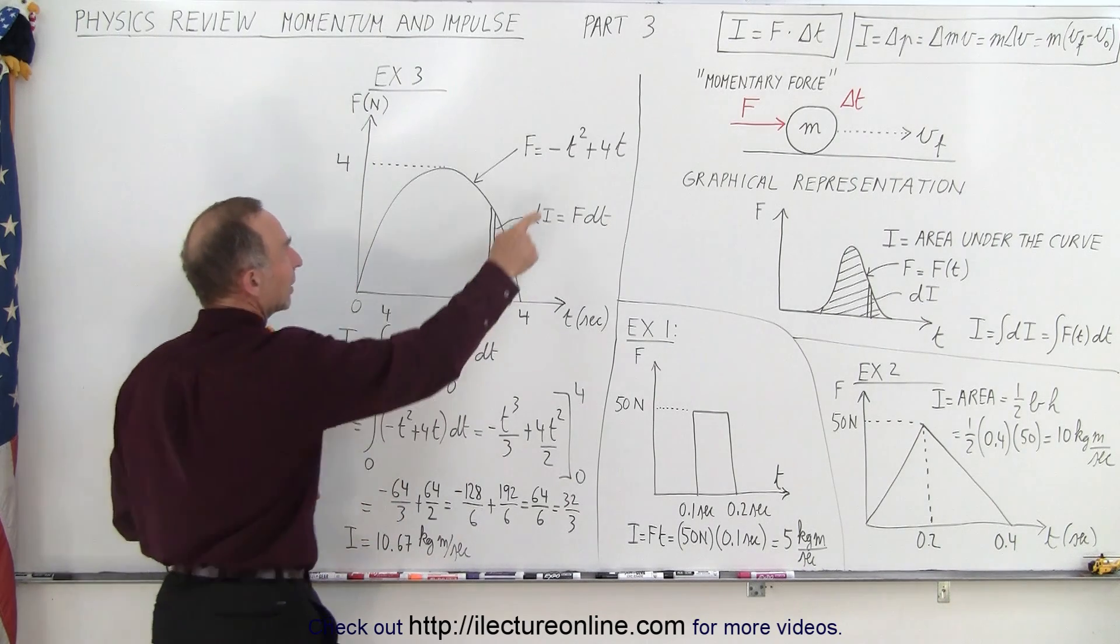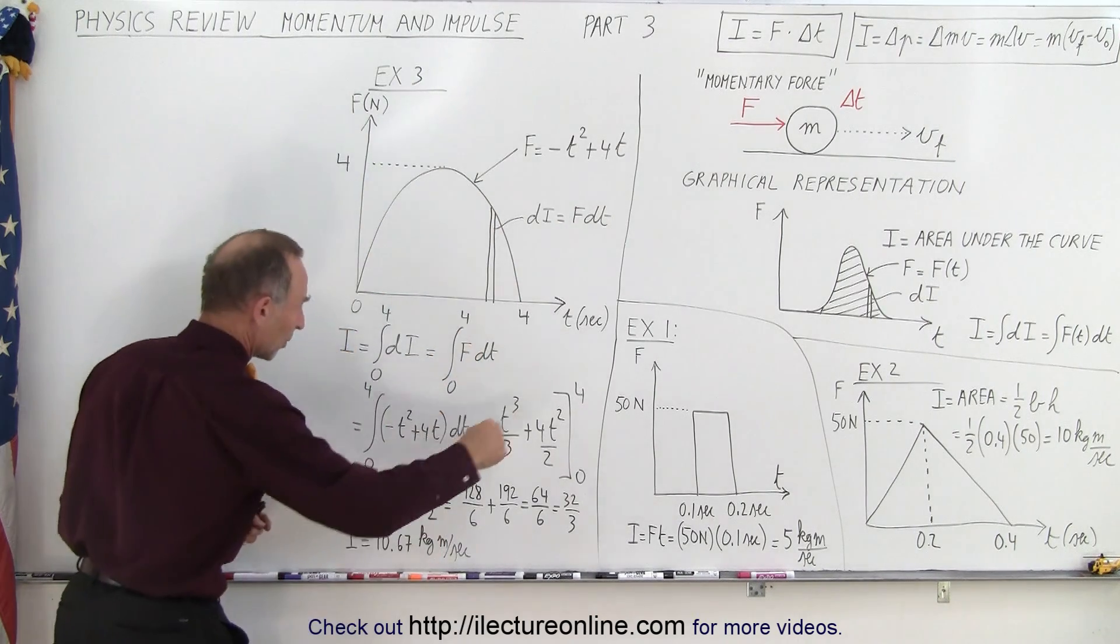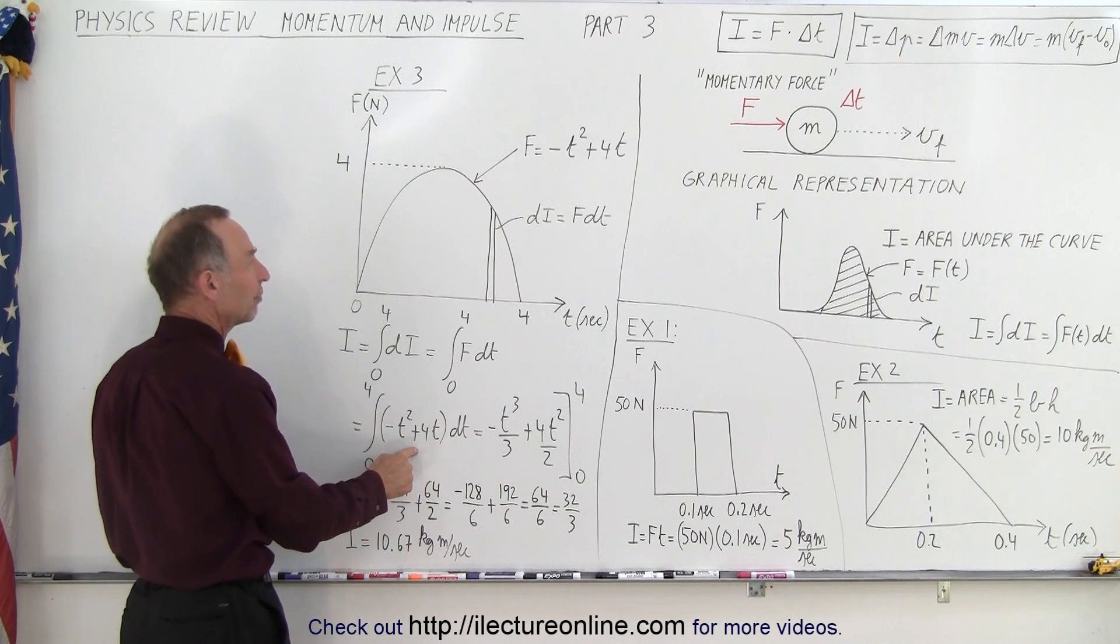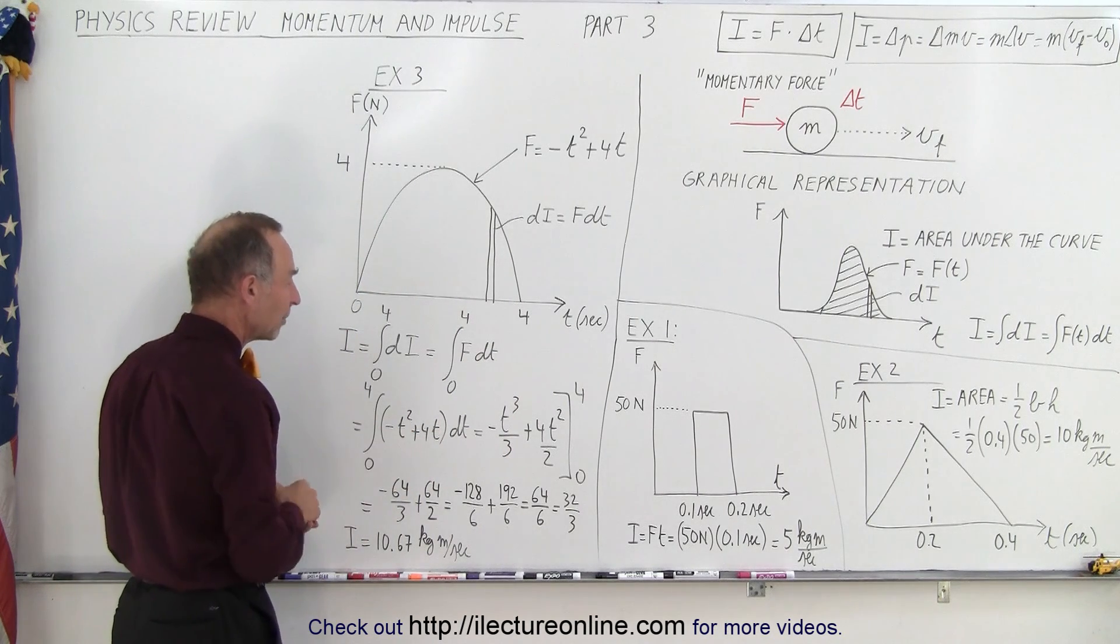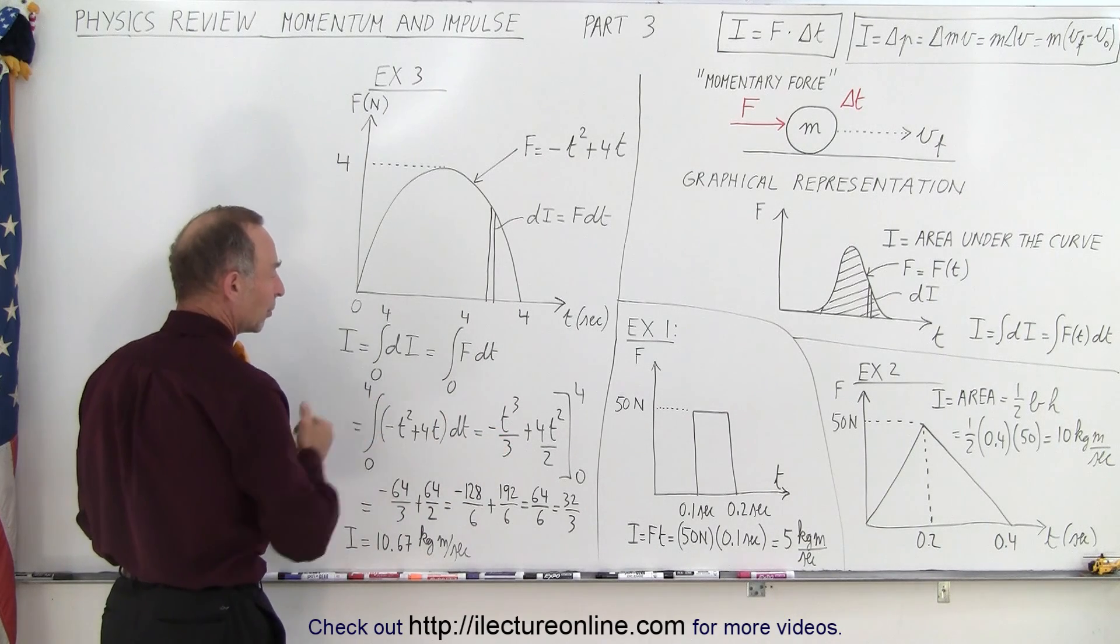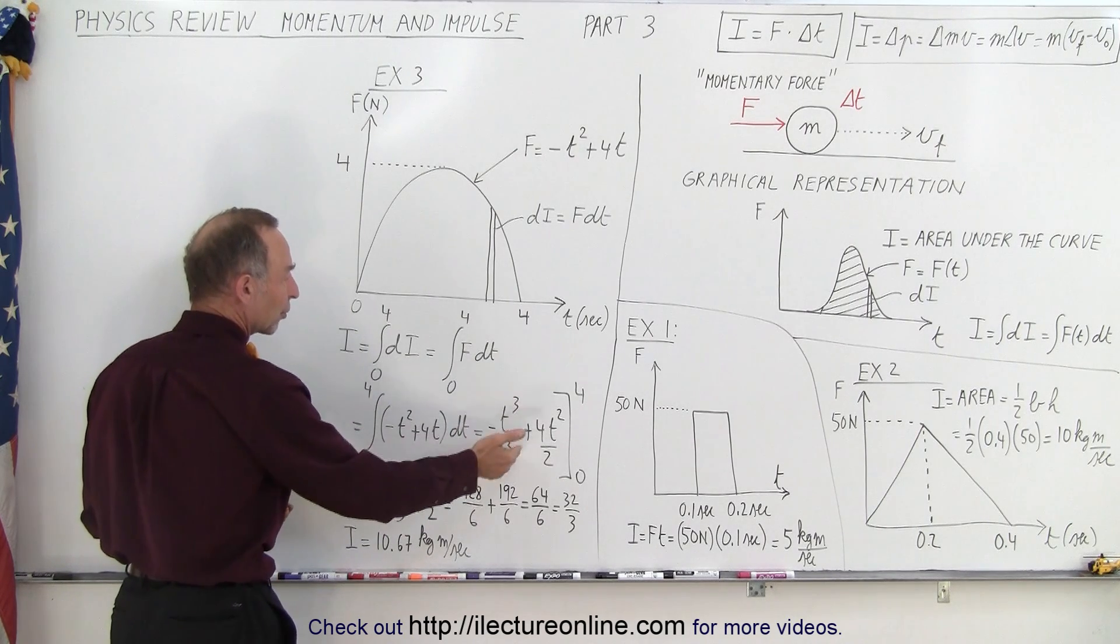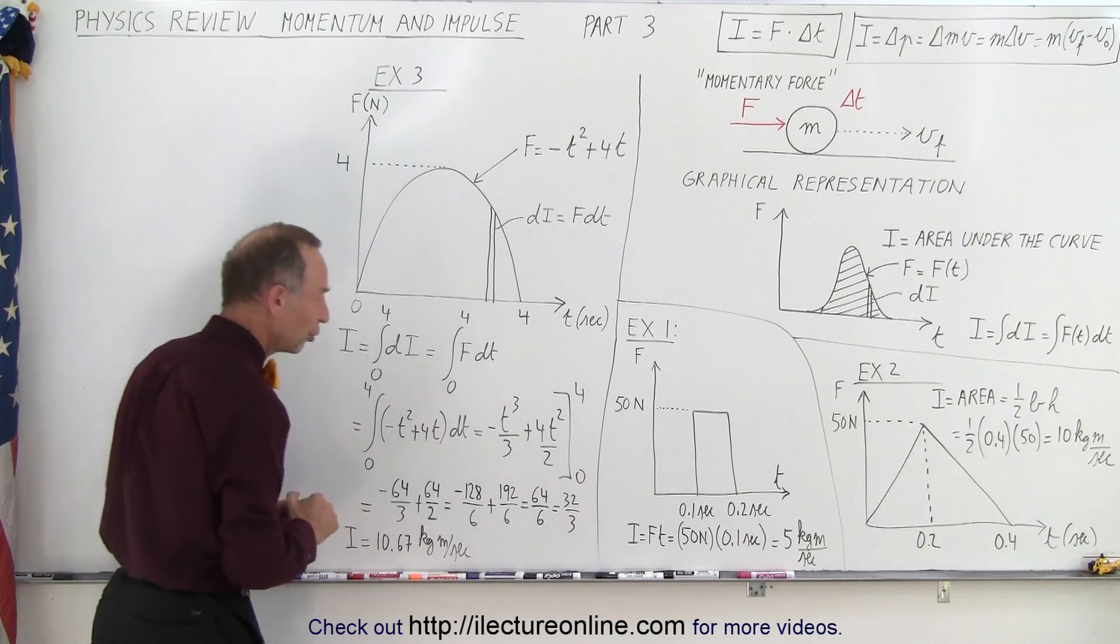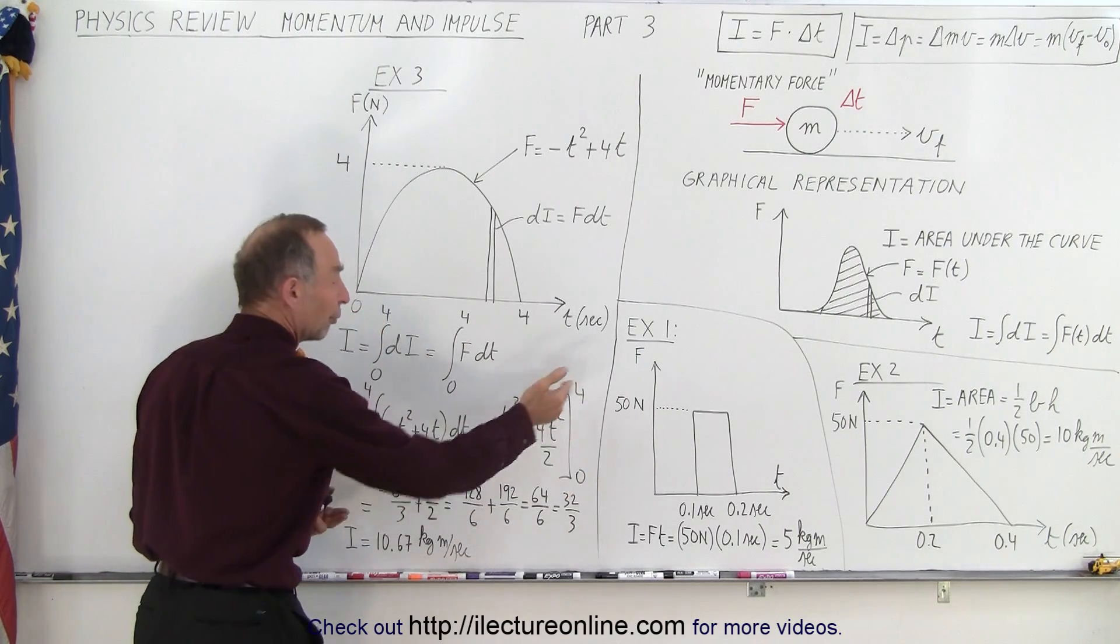And of course, the force is defined as minus t squared plus 4t, so we replace that by the equivalent function in terms of the time, times dt. We integrate that, so minus t squared plus 4t becomes minus t cubed over 3 plus 4t squared over 2. We evaluate it from 0 to 4.